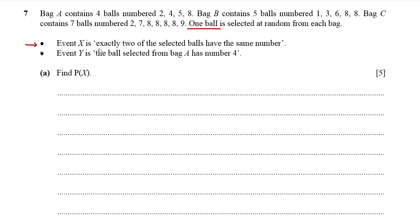Event X is that exactly two of the selected balls have the same number. Event Y is that the ball selected from bag A has number four. We need to find the probability of event X first. We need to identify all total cases for event X — exactly two of the selected balls have the same number. One ball is selected at random from each bag.